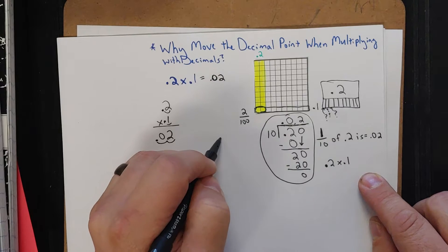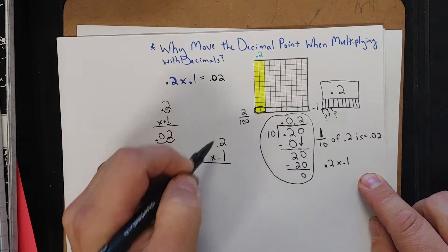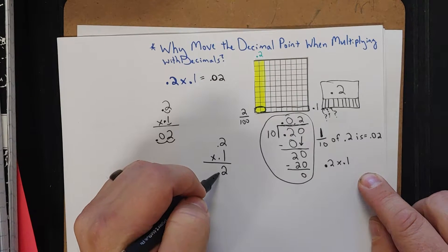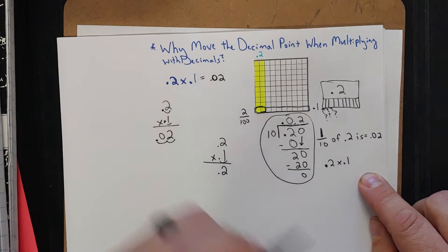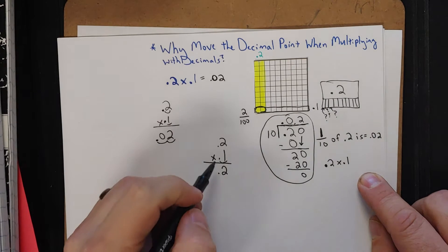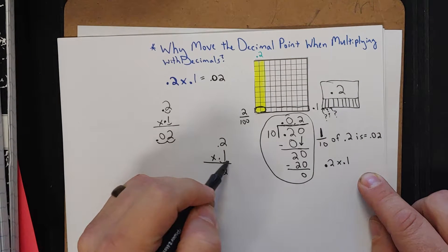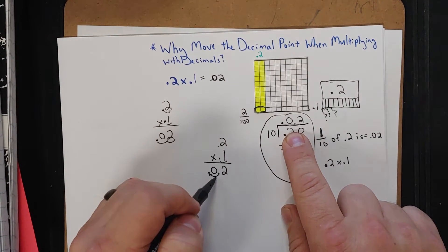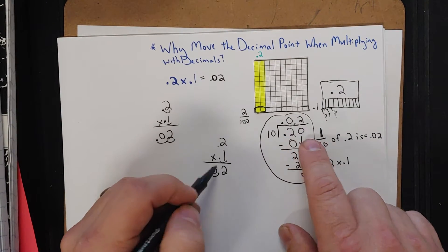Let's look at the algorithm again. 2 tenths times 1 tenth. 1 times 2 is 2. Well, that was 2 tenths. And then I also know that I'm taking not 1 whole group, but 1 tenth of a group. So I need to move that decimal over again by dividing by 10, which is what we did, which will get you 2 hundredths.